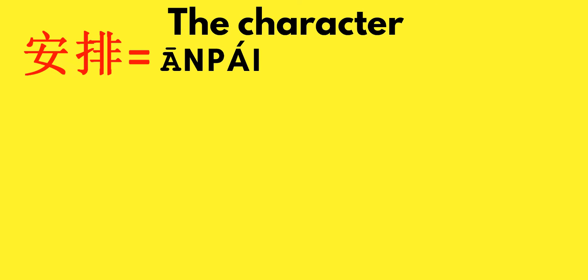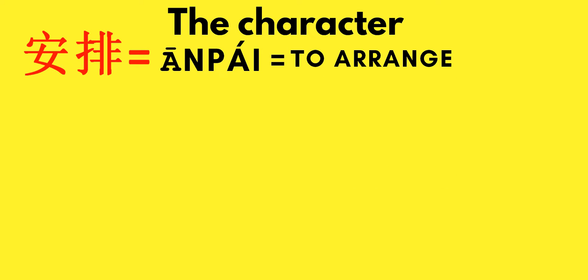The next character means to arrange something, and we could interpret it with a simple example. As I explained, the character 安 (ān) means peace, which I covered in one of my previous videos already uploaded on YouTube — you can watch it, but I will also explain it here. It is basically a character made with a roof radical, and then a woman is under that roof. A woman under a roof feels safe.